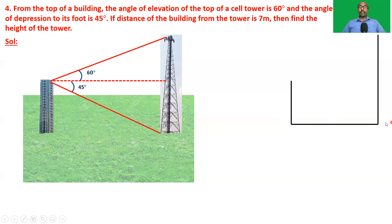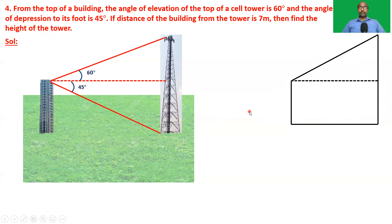Draw the figure for this data. The base has a building and a cell tower. This is the horizontal line. The angle of elevation from the top of the building is 60 degrees, and the angle of depression from the top of the building is 45 degrees.